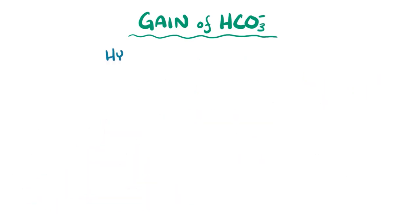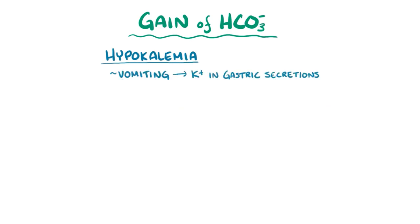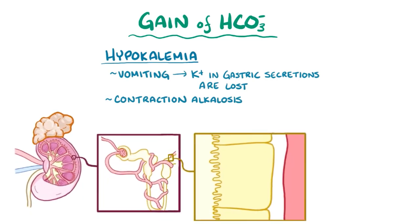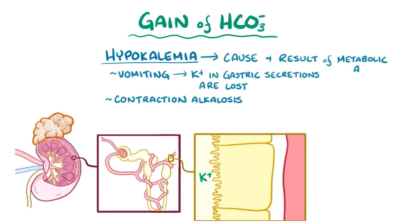In addition, there's often a hypokalemia. In vomiting, for example, potassium ions in the gastric secretions are lost. In other situations, there's an increase in aldosterone, like during a contraction alkalosis or when there's an adrenal tumor. The aldosterone can affect principal cells which line the distal convoluted tubule and collecting ducts, making them excrete potassium into the urine. So essentially, hypokalemia can be both a cause and a result of metabolic alkalosis.